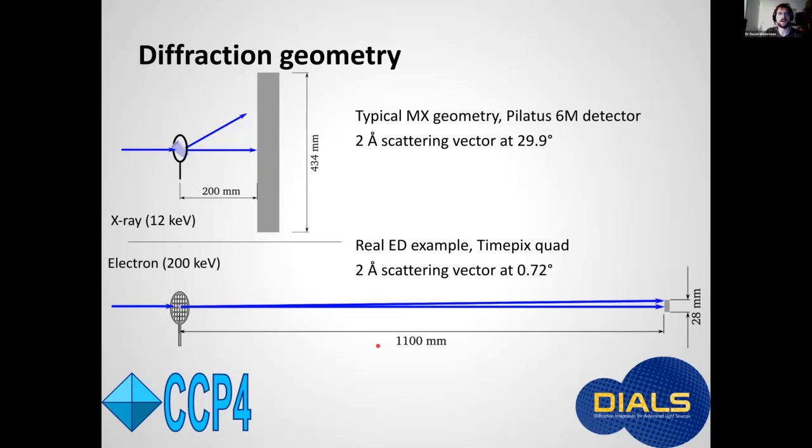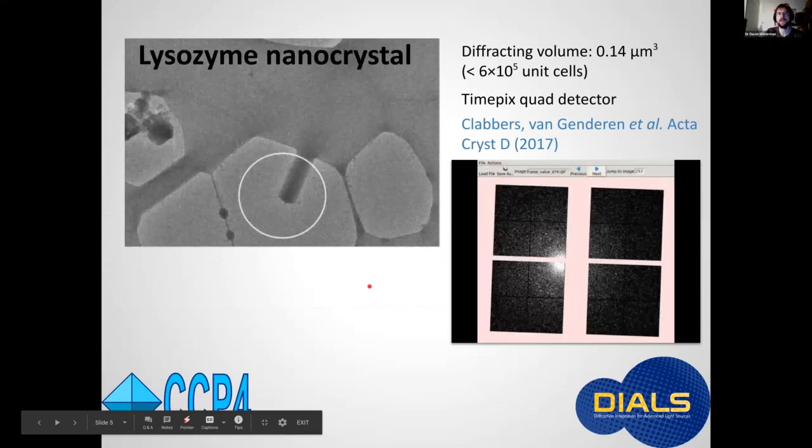This large detector distance is a lie. It's only an effective distance. In truth, the distance in the microscope is fixed. And this effective distance is a function of the lenses of the microscope.